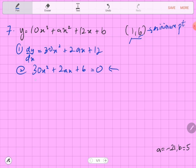We substitute x equal to 1. It will be 30 of 1 square plus 2 of a multiplied by 1 plus 12, not b, sorry, plus 12 is equal to 0.